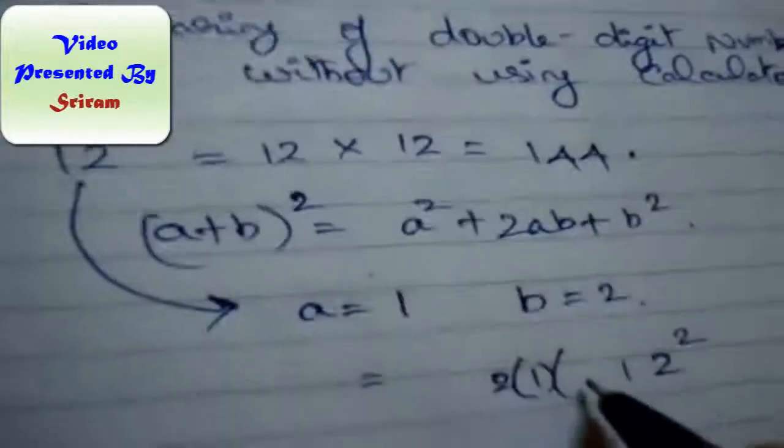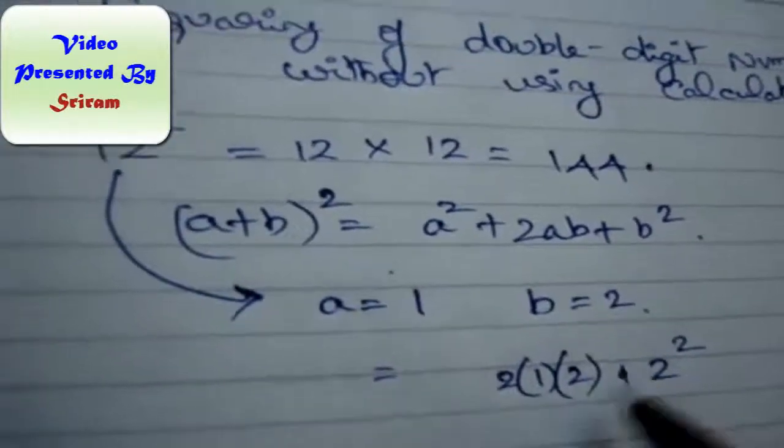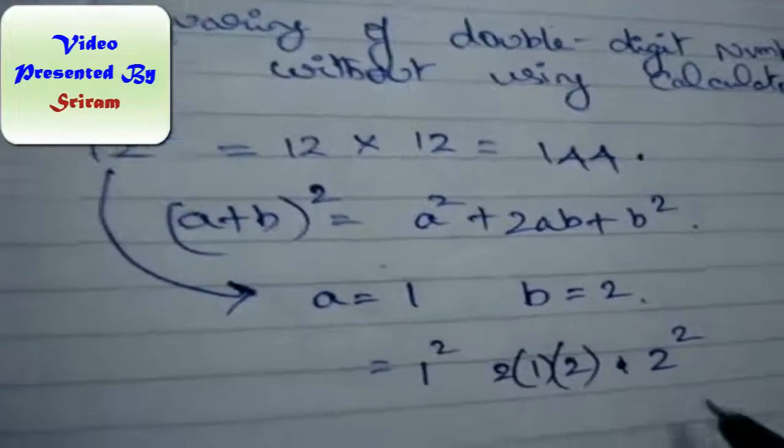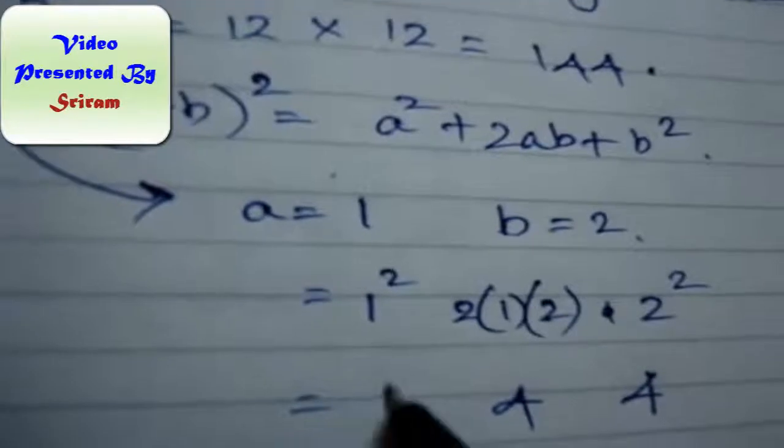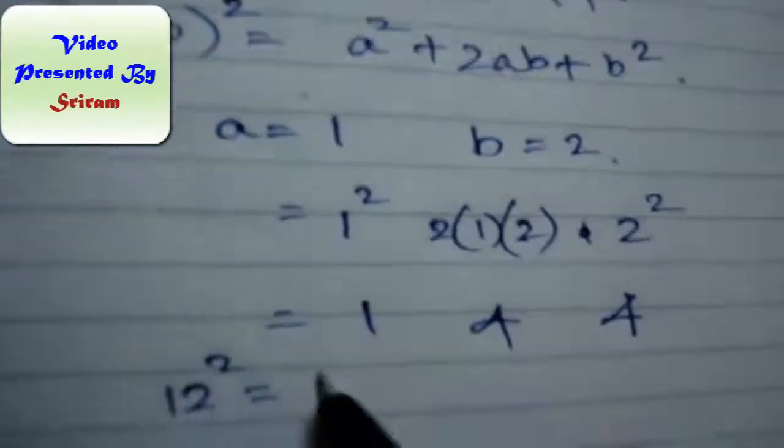2 into a into b, and 1 squared. So the result is: 2 squared is 4, 2 times 2 is 4, and 1 squared is 1. So 12 squared is 144.